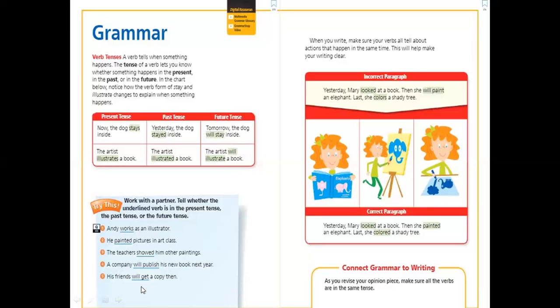This is how we can recognize the difference between present, which we can add s, es, or ies with a verb when we are talking about singular things or persons, and we can add nothing to the verb in present when we use or talk about plurals or we, they, you. And also in the past tense with all the singulars and plurals and pronouns, we add ed, ied, or d with the verb, like stayed, illustrated. Here we added ed.